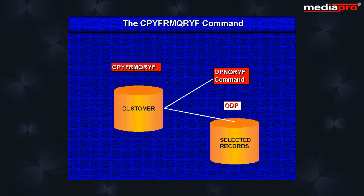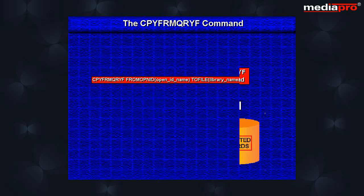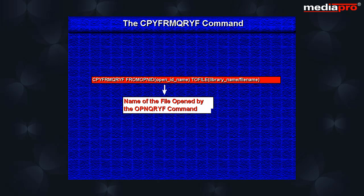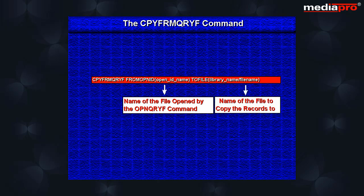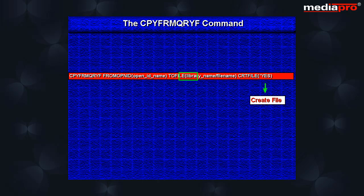The copy from query file command can be used to copy the database records selected by the open query file command to a database file. Here, in the from open ID parameter, you specify the name of the file opened by the open query file command. In the to file parameter, specify the name of the file to which you want to copy the records. The star yes value for the create file parameter will cause the file specified in the to file parameter to be created if it does not already exist.